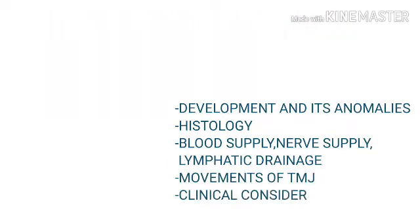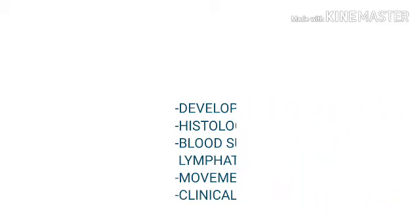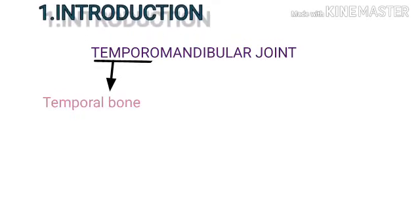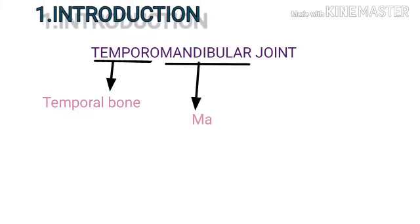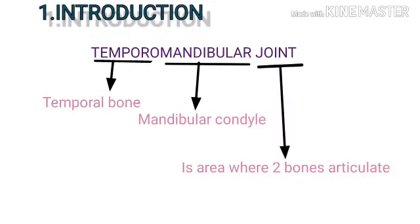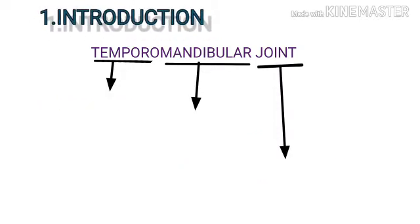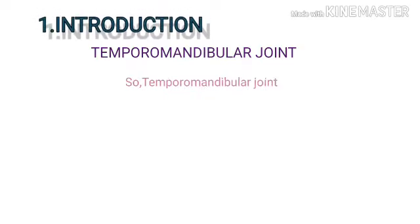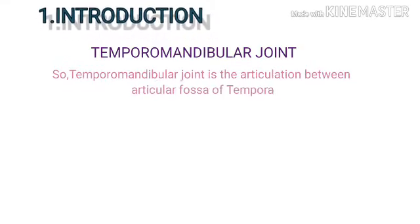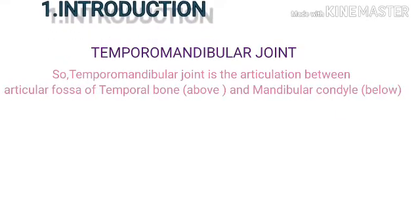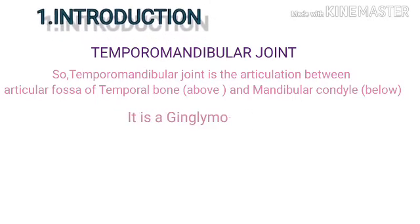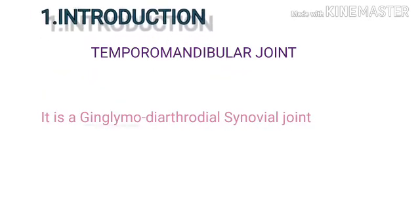Introduction of TMJ: 'temporal' stands for temporal bone, 'mandibular' for mandibular condyle, and 'joint' is the articulation between two bones. So the temporomandibular joint is the articulation between the articular fossa of the temporal bone above and the mandibular condyle below.